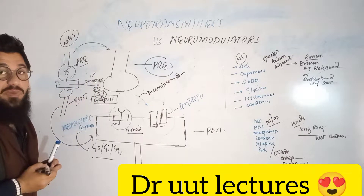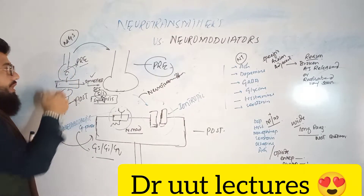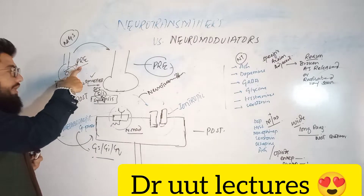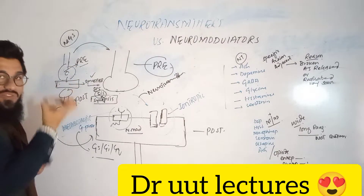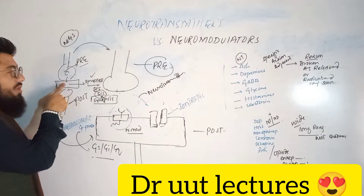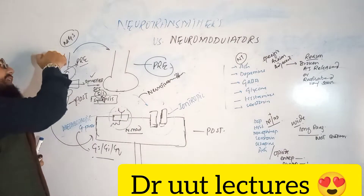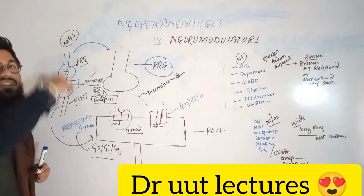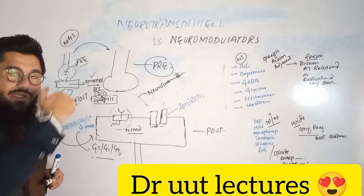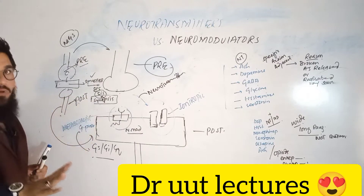The synapse is the space between two neurons. The neuron from which the chemical is released is called the presynaptic neuron, and the neuron which is receiving the chemical is called the postsynaptic neuron. Because of this space, the neurons are named: pre-synaptic (before) and post-synaptic (after). I hope you got that point.